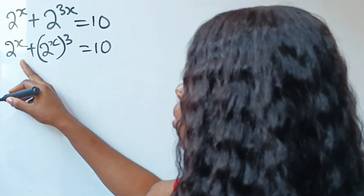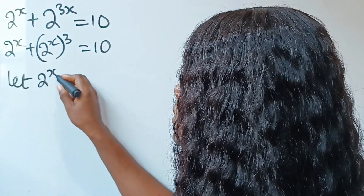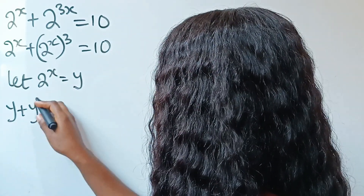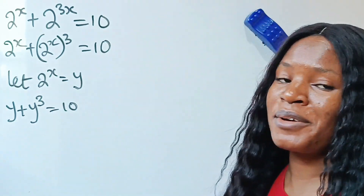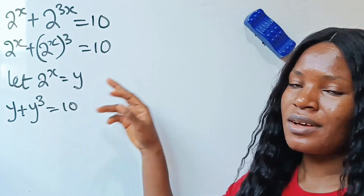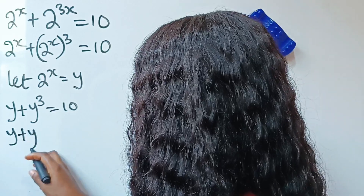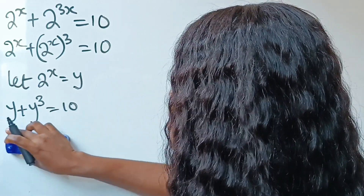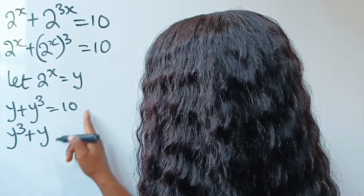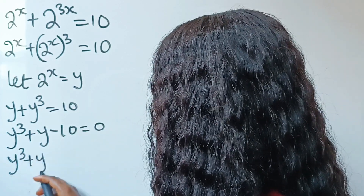So we have 2 to the power of x raised to the power of 3 is equal to 10. Let 2 to the power of x be equal to y. That means we are going to have y plus y to the power of 3 is equal to 10. Now we have y plus y cubed, and let me arrange this well — since this is cubic, y to the power of 3 comes first, then plus y, and this 10 crosses over to become minus 10, equal to 0.